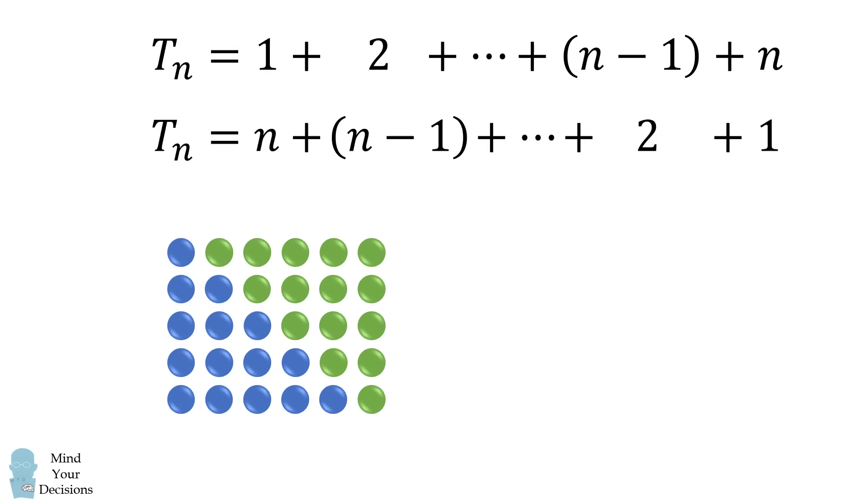Notice that each row has an interesting and constant sum. The first row is equal to 1 plus n, which is equal to n plus 1. The second row is also equal to n plus 1, because we pair 2 with n minus 1. Every single row will have a constant sum that is equal to n plus 1.